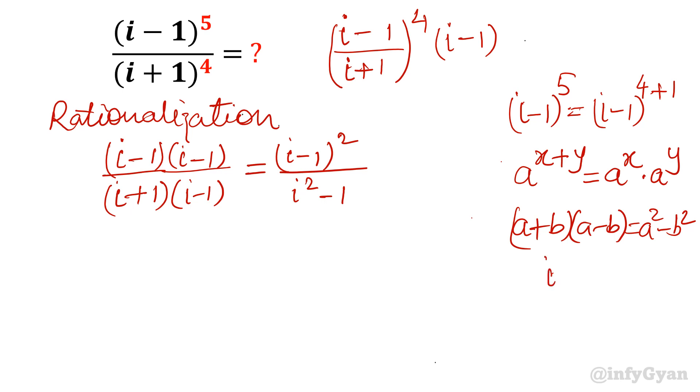So iota^2 we know is -1. And (i-1)^2, I will write as iota^2 plus 1 minus 2 iota. Using (a-b)^2 equals a^2 plus b^2 minus 2ab, we get iota^2 plus 1 minus 2 iota over iota^2 minus 1. Now iota^2 is -1, so these terms get cancelled out. What is left is -2 iota over 2.